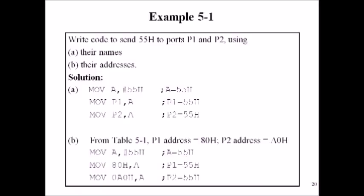Example: Write a code to send 55H to ports P1 and P2 using their names and their addresses. First, using their names: MOV A, #55 loads the accumulator with immediate value 55, then MOV P1, A and MOV P2, A copy A into P1 and P2 using register addressing. Then, using their addresses: MOV A, #55, and store into P1 and P2 by using their direct addresses.